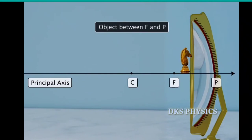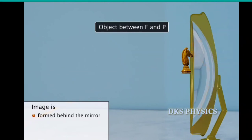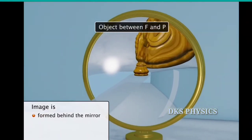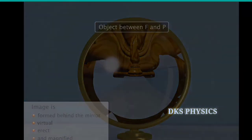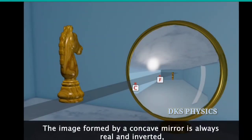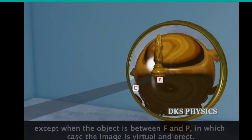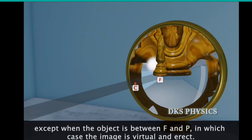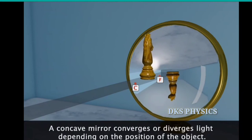When the object is placed between F and P, the image is formed behind the mirror and is virtual, erect, and magnified. Thus, the image formed by a concave mirror is always real and inverted, except when the object is between F and P, in which case the image is virtual and erect. A concave mirror converges or diverges light depending on the position of the object.